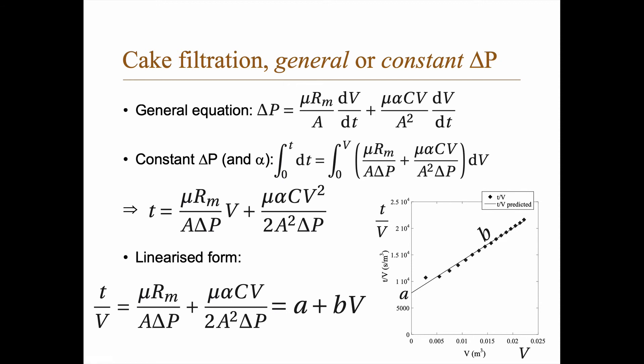We will often use cake filtration for constant transmembrane, sorry, constant pressure applied and also constant filtration resistance. And if we do that, if we assume those constant, then we get this integral and you integrate this up. And then you get an equation that looks like this, that the time equals the viscosity times the resistance of the filter divided by the area and the pressure times the volume. And then you have the cake part, viscosity times the filtration resistance concentration, the volume squared, and then divided by 2A squared delta P.